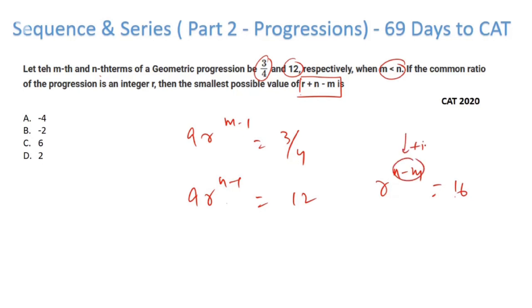Now I have to get the smallest possible value of r + n - m. See, n is greater than m, so this is going to be positive for sure. If I have to get the minimum value here, I can make r negative, but I have to remember that r is definitely an integer.